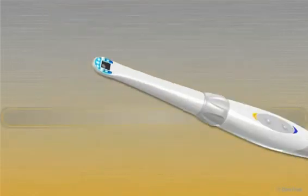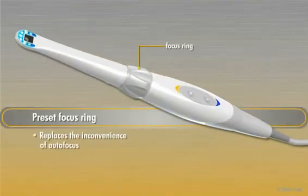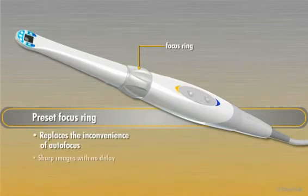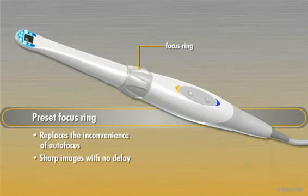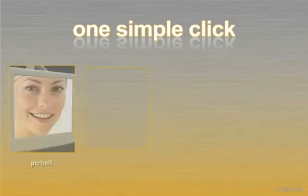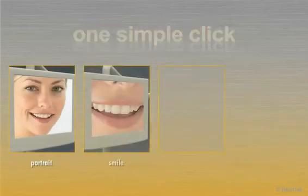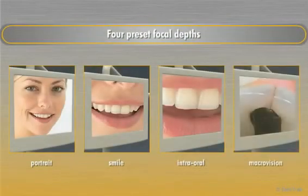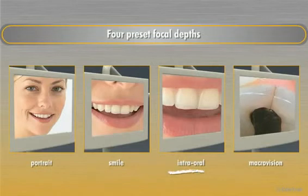A preset focus ring replaces the inconvenience of autofocus and provides sharp images with no delay regardless of the object or the distance. With one simple click, you can easily switch between four preset focal depths: portrait, smile, intraoral, and macrovision.